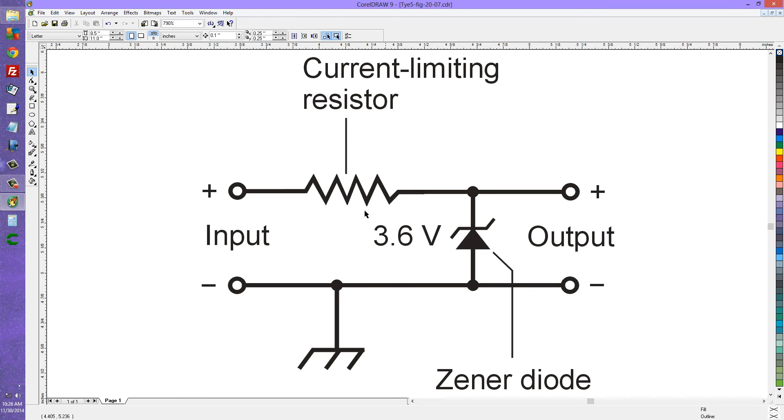Again, if you don't have that current limiting resistor there, you are going to have very hard trouble with this diode when it begins to conduct. It will probably burn out and that is why they use those resistors in circuits like that.